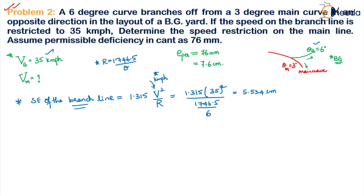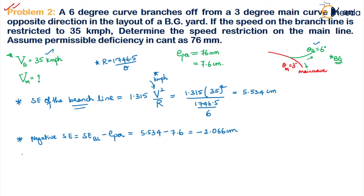Now we have to find the super elevation for the main line. In order to do that, first we have to find the negative super elevation. The negative super elevation is nothing but the super elevation of the branch line minus the permissible elevation. So 5.534 minus 7.6 gives us minus 2.066 centimeters. This is the negative super elevation, and the maximum super elevation that can be given on the main line is 2.066 centimeters.